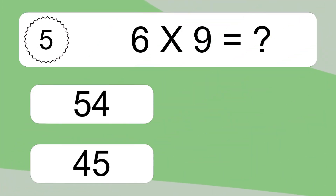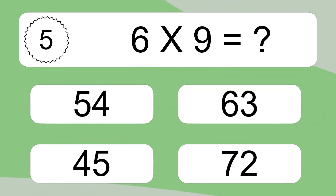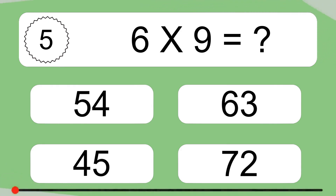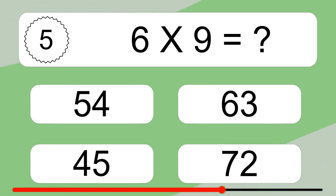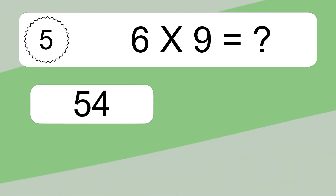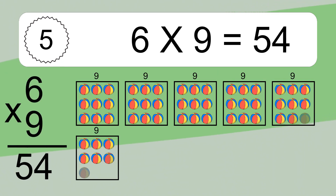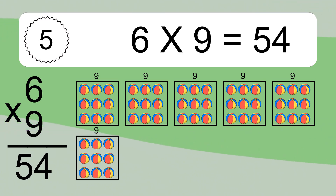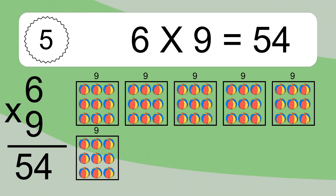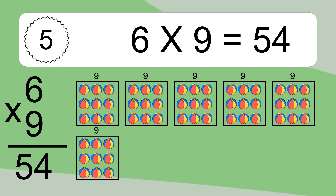6 times 9 equals what? 6 times 9 equals 54. We have 6 boxes, and each box has 9 colorful balls inside. If you count all the balls in all the boxes together, you will have 6 times 9 balls. This equals 54 balls.